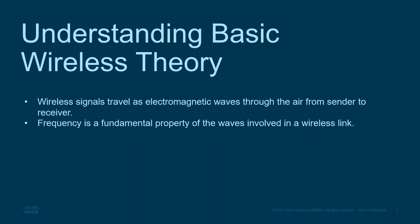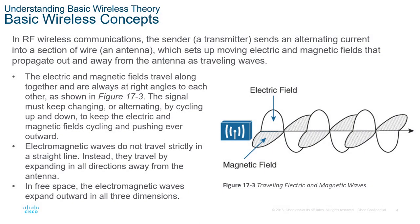The first section is understanding basic wireless theory. Wireless signals travel through the air as electromagnetic waves. Frequency is a fundamental property of the wave as it relates to data transfer. In radio frequency communication, the sender or transmitter sends an alternating current into a section of wire — the antenna — which sets up moving electric and magnetic fields that propagate outward. The electric and magnetic fields travel together and are always at right angles to each other; they are never parallel, always perpendicular.